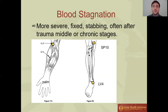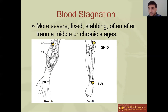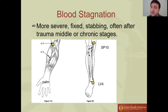Blood stagnation — you'll feel more severe, fixed, stabbing pain. It can happen at any stage but is more common in the middle to late stages. If you've had an injury for a long time, there's often a blood stagnation component — circulation hasn't been good to that area, so there's old blood that needs to be moved. Liver 4 and Lung 5 are my go-to for the majority of blood stagnation type pain. Spleen 10 is also very helpful, especially for athletic people with chronic injuries.